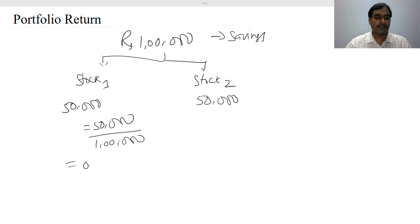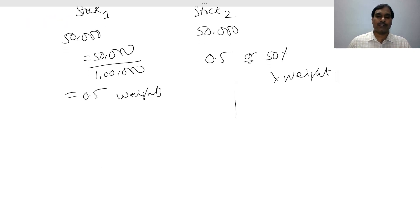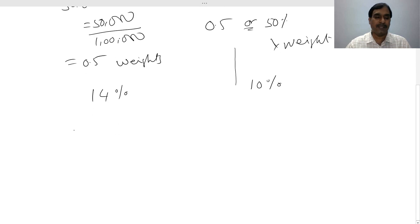This gives us 50,000 divided by 1 lakh, which equals 0.5 — similarly 0.5 for Stock 2. These proportions are called weights: the weight is what proportion of the total amount you invested in each security. Now suppose Stock 1 gives you a 14% return and Stock 2 gives you a 10% return.